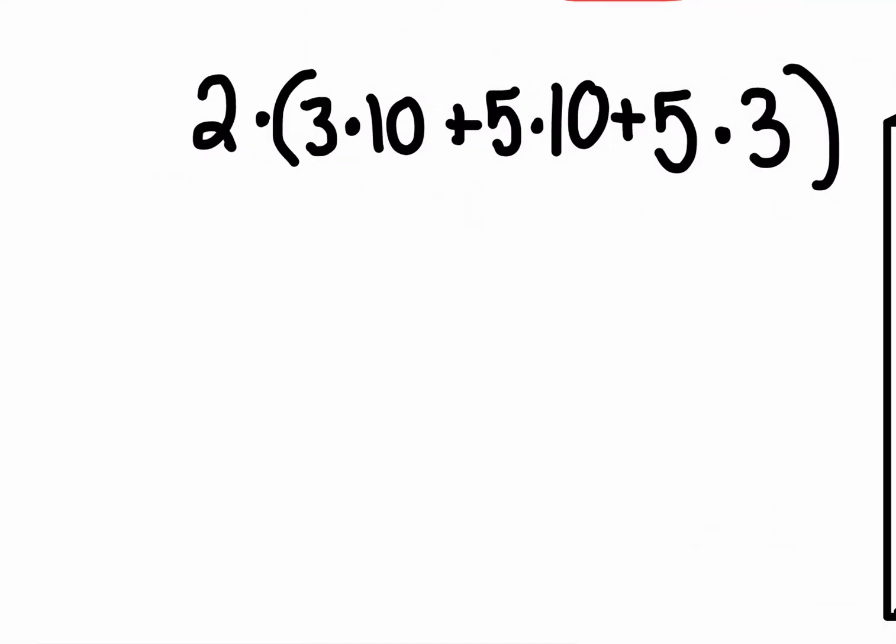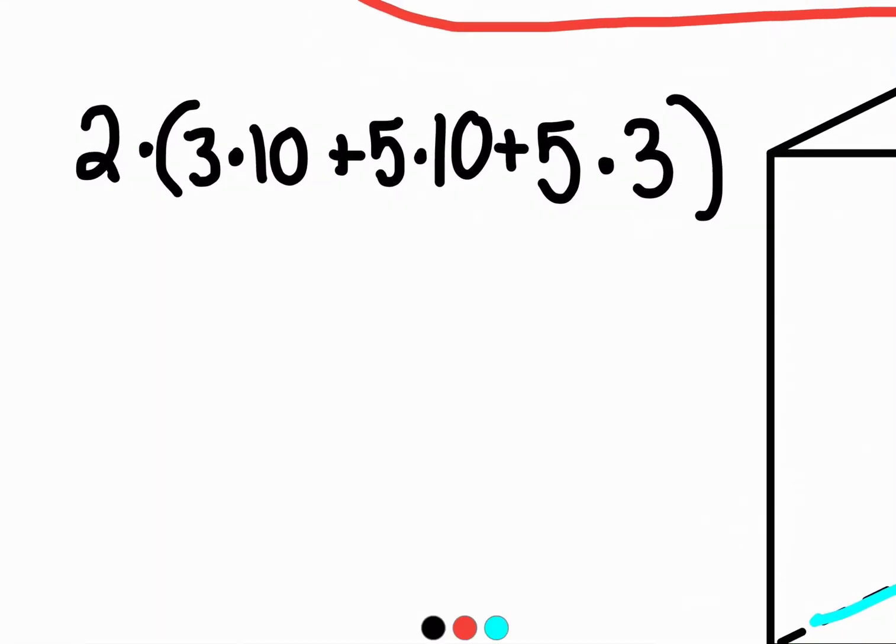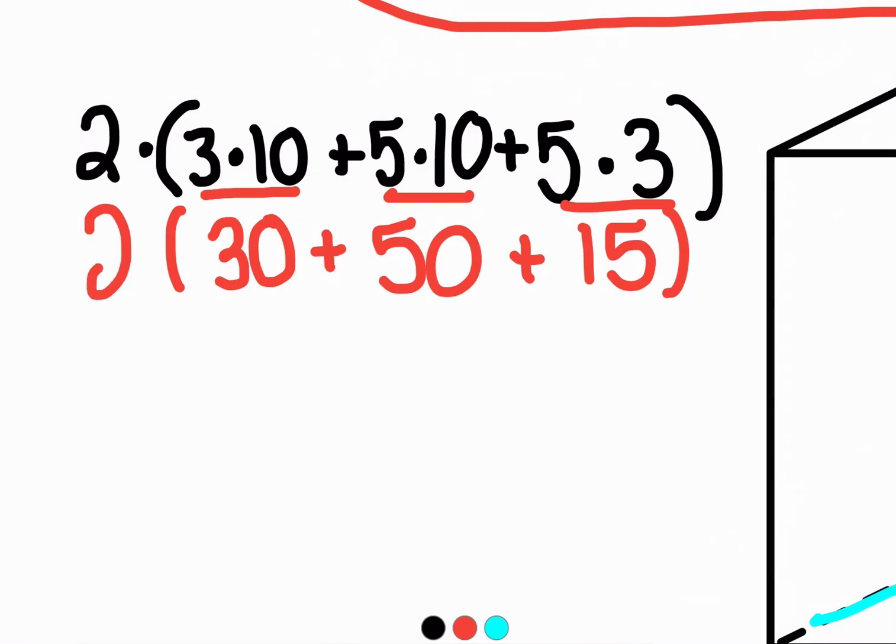So please excuse my dear Aunt Sally. I figure out the area of this figure. Three times 10 is 30. I figure out the surface area of this figure. Five times 10 is 50. And I figure out the surface area of this shape. Five times 3 is 15. I figured out the surface area of all the individual shapes. The reason I'm multiplying this two by each of these is because I have two shapes that have a surface area of 30 feet squared, two shapes that have a surface area of 50 feet squared, and two shapes that have a surface area of 15 feet squared.